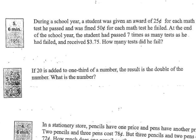Alright, so during a school year, a student was given an award of 25 cents for each math test that he passed, and was fined 50 cents for each math test that he failed. At the end of the school year, a student had passed 7 times as many tests as he had failed. It's an important piece of information. And he received $3.75. Question here is, how many tests did he fail?